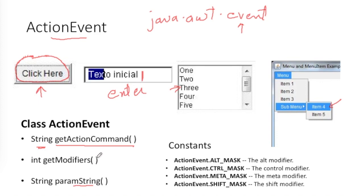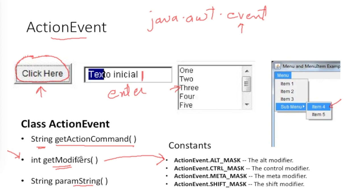One more method is getModifiers(). Sometimes we hold a Shift, Ctrl, or Alt key and click on a button, menu item, or list box. If you are holding a key while clicking, this method returns the value for that key. The possible return values are constants such as ALT_MASK, CTRL_MASK, SHIFT_MASK, or META_MASK, indicating whichever modifier key was pressed.